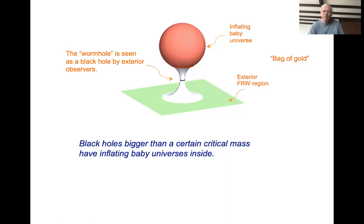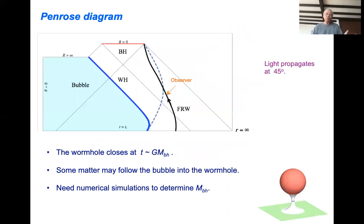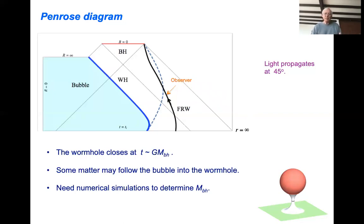The spacetime structure can be illustrated using a Penrose diagram. To understand these diagrams you need a bit of practice, but they are very useful to illustrate the causal structure of spacetime, because they represent the infinite spacetime in a finite diagram. In this diagram, light propagates at 45-degree angles, so causal relations are easy to see.